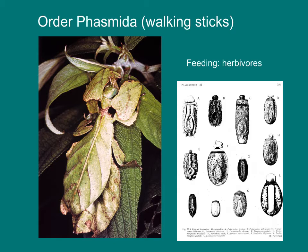Walking sticks, the order Phasmidae, are a fascinating group of herbivorous insects that blend into the background vegetation very well. Some resemble leaves or stems. The eggs of many walking sticks have a nutritious tip that is attractive to ants. Ants collect the walking stick eggs and bring them back to their nests, which benefits the walking stick through protection, while ants get a nice snack from the eggs.